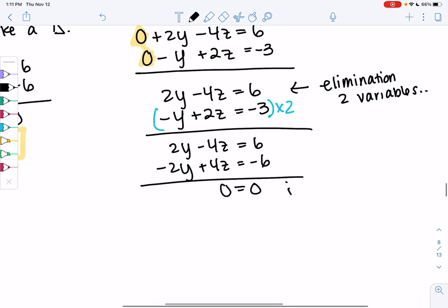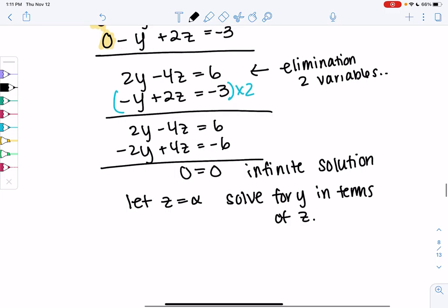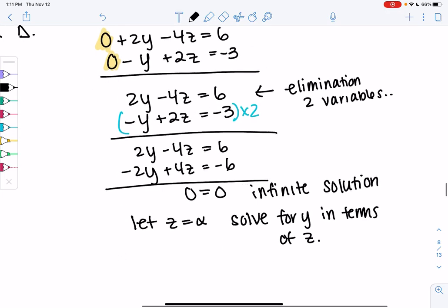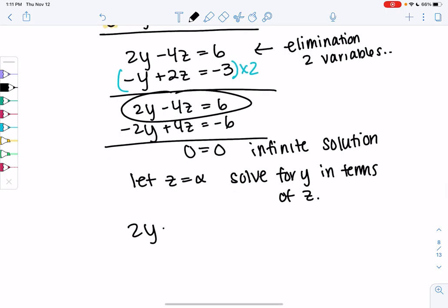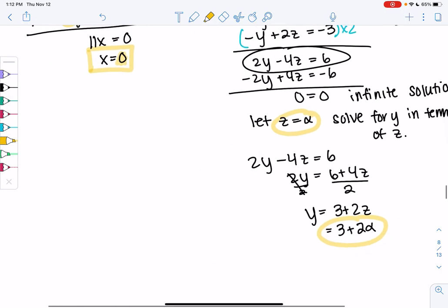This tells me we have infinite solutions for y and z. We'll let z equal alpha and solve for y in terms of z. I'll use this equation: 2y minus 4z equals 6. So 2y equals 6 plus 4z, divide by 2. y equals 3 plus 2z, and we called z alpha to make it an arbitrary number. We found the solution. x is zero, y is 3 plus 2 alpha, and z is alpha. That's my infinite solution.